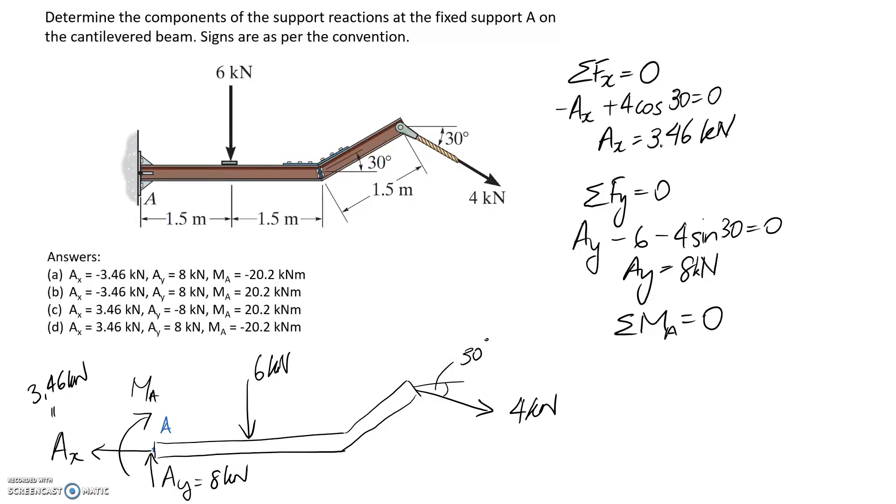If we sum moments about A, remembering that anti-clockwise is treated as the positive direction, we set Ax and Ay out. The next one we can consider is the actual moment reaction, and we've drawn this in the clockwise direction, so that means it needs to go in the equation as negative. We've then got the 6 kilonewtons acting at a distance in here, which we can get as 1.5, and this is going to rotate negative.